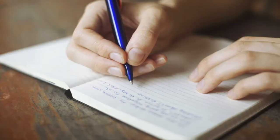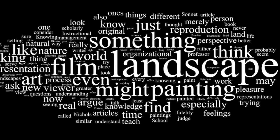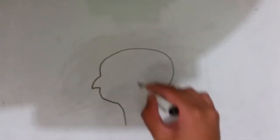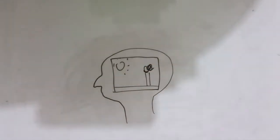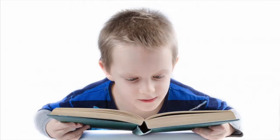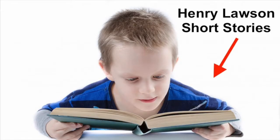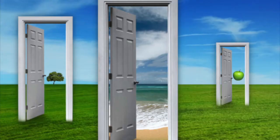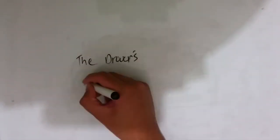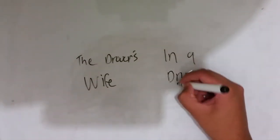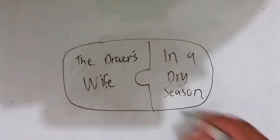Distinctive visuals are an integral language device where writers utilise wording to allow readers to visualise. This is able to create a mental picture in the reader's head, showing the audience rather than telling. This quality of distinctive visuals is able to create interest and draws us into the experience of others, enabling us to envision a reality away from our own engaging the viewer. The short stories that perfectly illustrate this are The Drover's Wife and In a Dry Season.